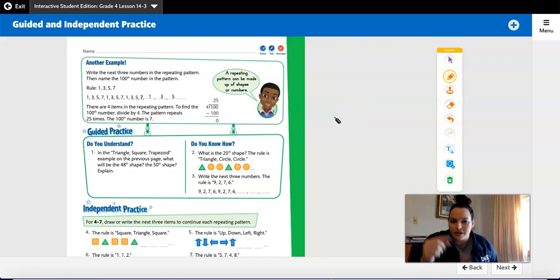Okay, so you have triangle square trapezoid and you need to know the 48th shape. So we're going to do 48 divided by 3. That gives me 16 evenly. No remainders. So I know that the last number, the 48th number, is going to be the trapezoid.